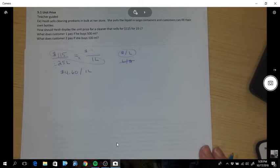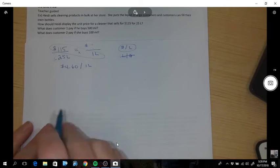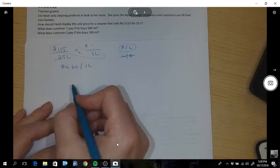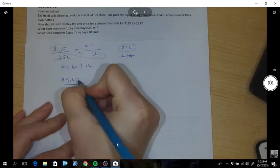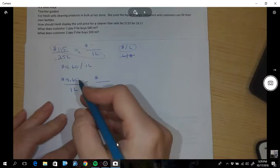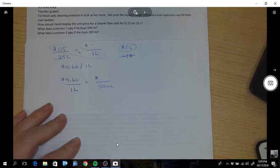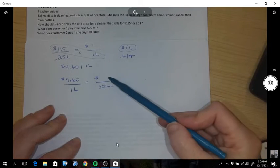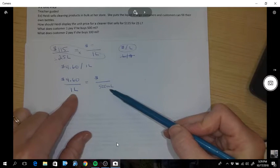Okay, what does customer one pay if he buys 500 milliliters? So now we know this: $4.60 per one liter. We want to know how much the customer is going to buy for 500 milliliters. So look at my t-shirts. They're the same, but what about my pants? They're not the same. So I need to make them the same.